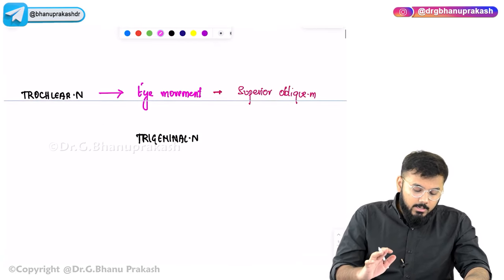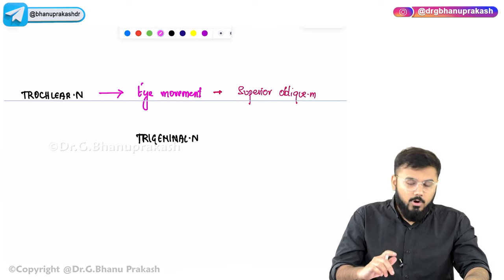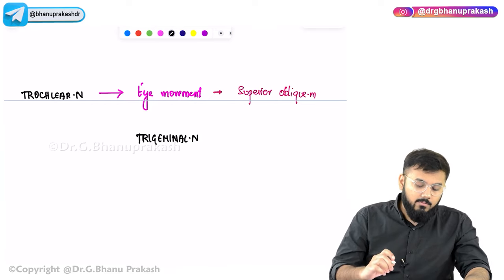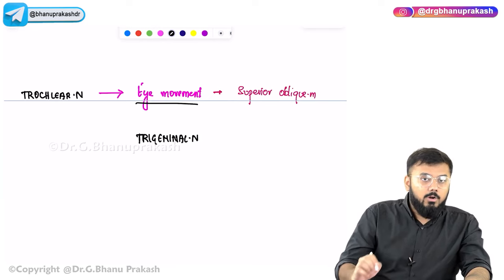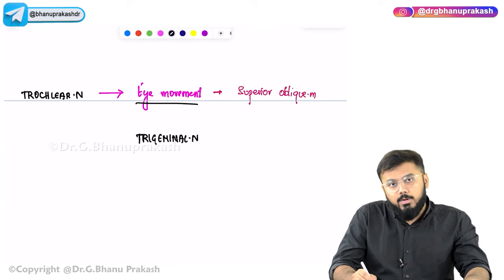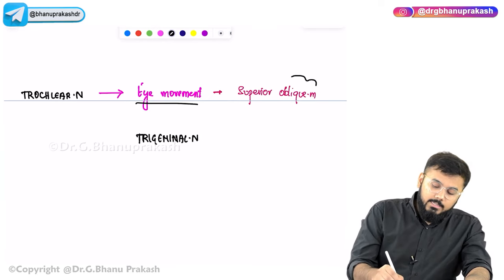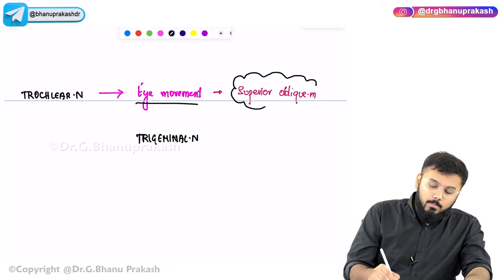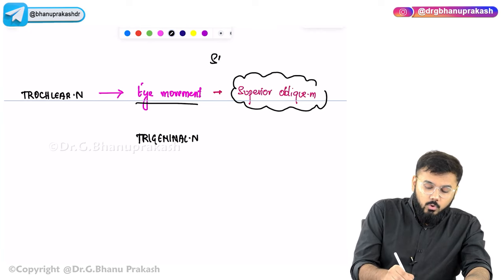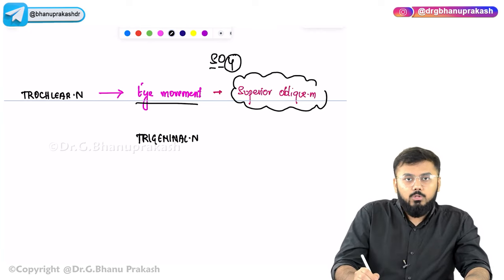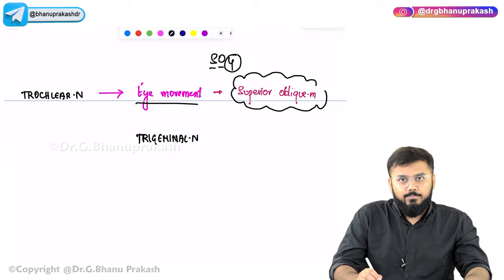Coming to the trochlear nerve (CN IV), it has only one function: eye movement via the superior oblique muscle. This is what SO4 means — superior oblique supplied by the fourth cranial nerve.